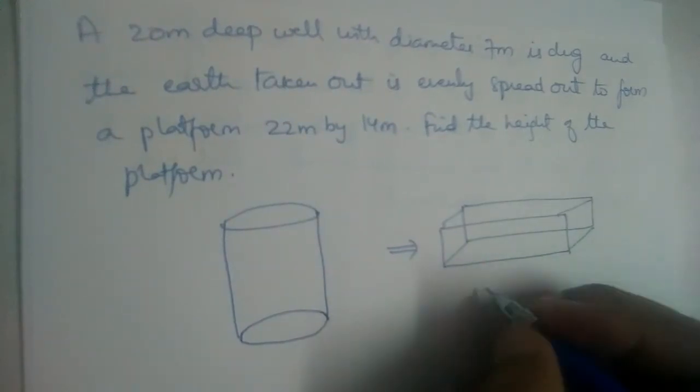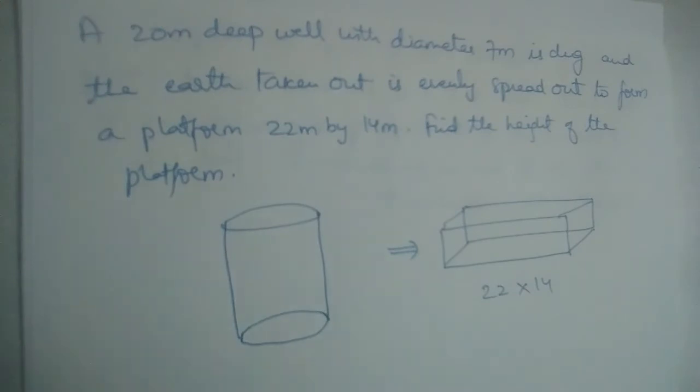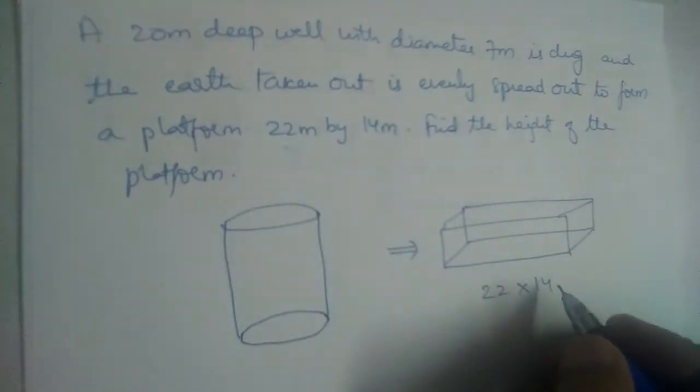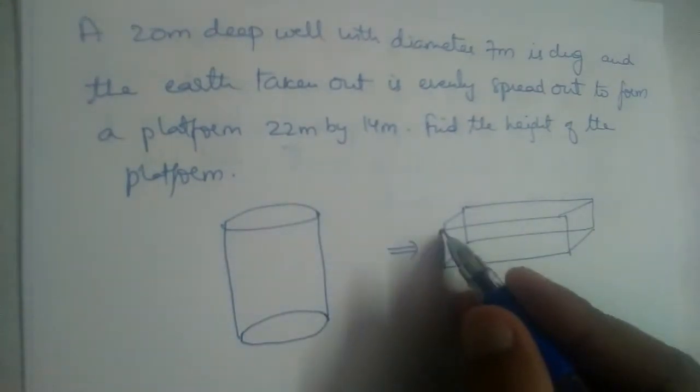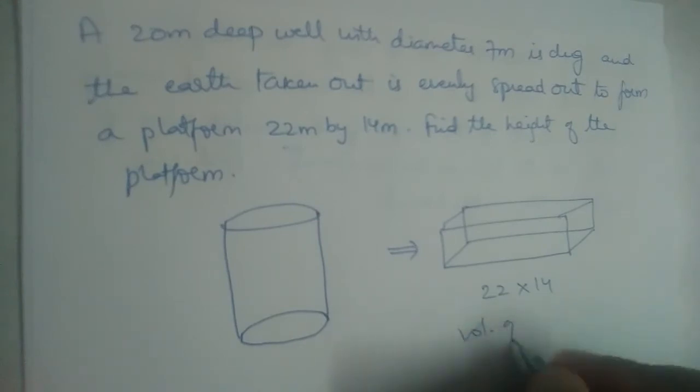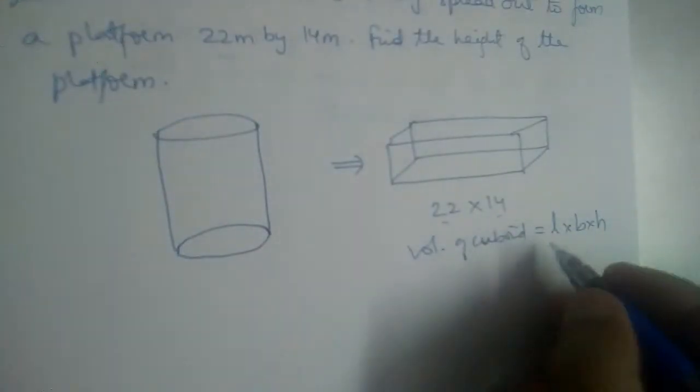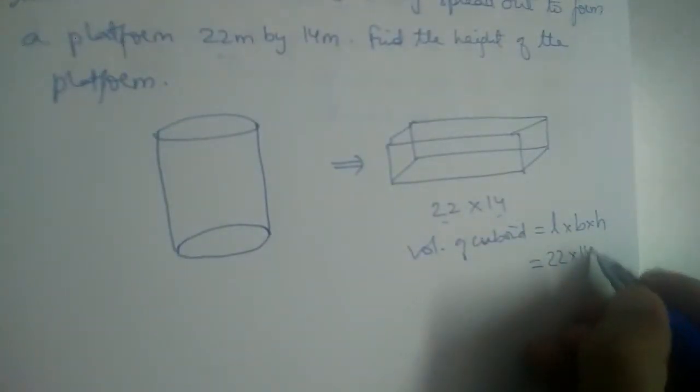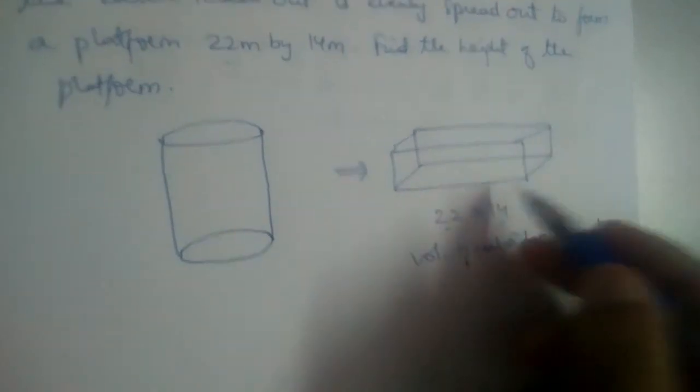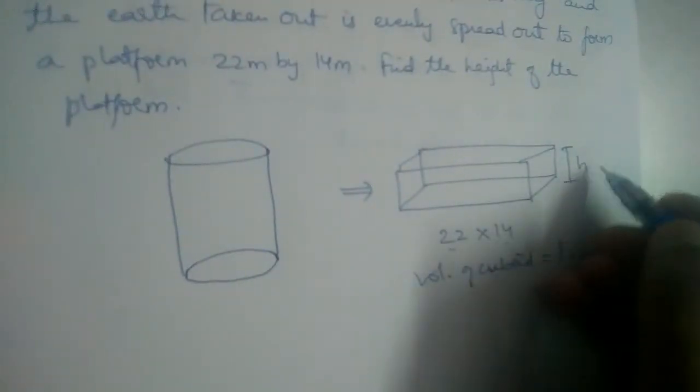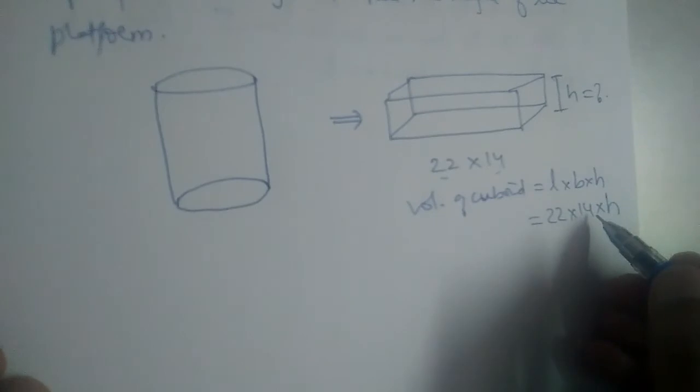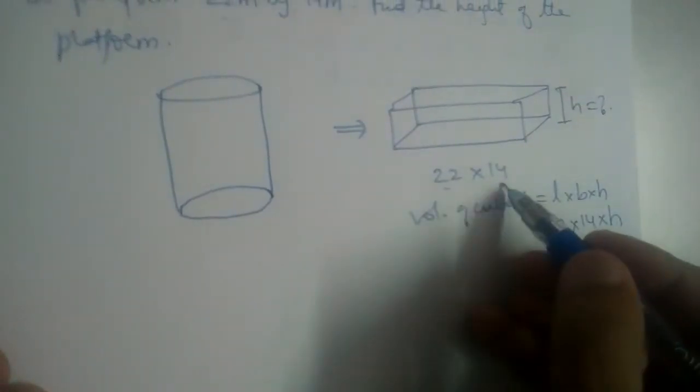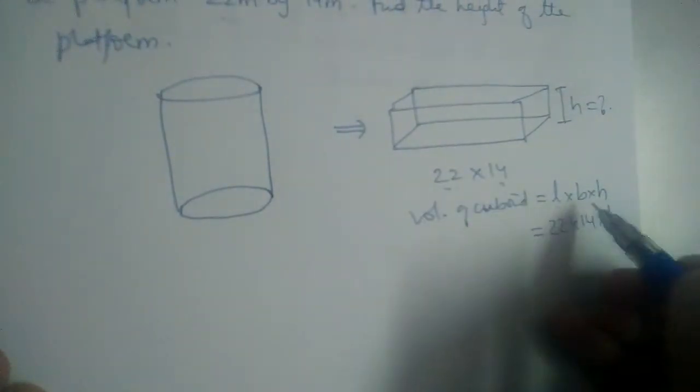What are the dimensions of this platform? Given 22 by 14. The volume of a cuboid will be equal to l into b into h. There are only two dimensions given, 22 into 14. We need to find the value of h, the height of this platform. Length and breadth are given, we need to find h.